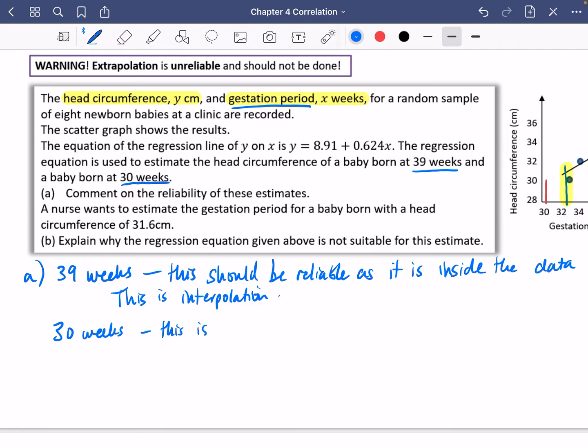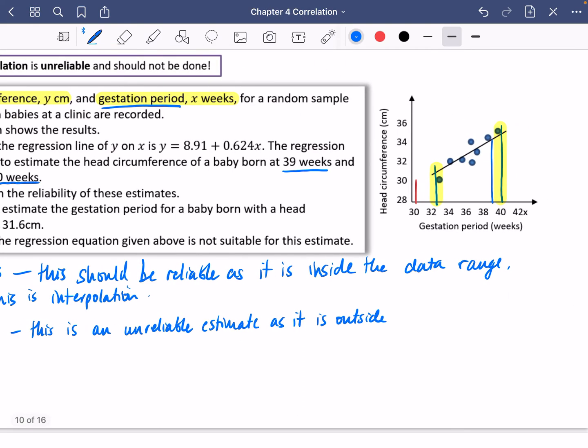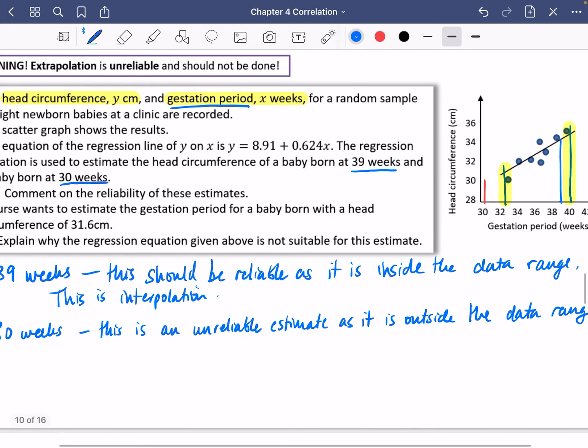So 30 weeks - this is an unreliable estimate as it is outside the data range. Or you could call that extrapolation. You could say it's an unreliable estimate as it is extrapolation. This is extrapolation.